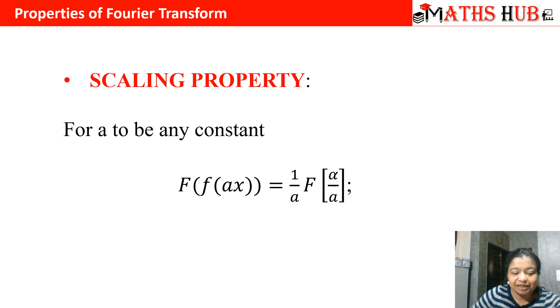The scaling property says that whenever the Fourier transform for the function f of x is equal to f of alpha, then when we change the scale, meaning x is changed to a times x, we multiply by the scaling factor 1 by a, and in your Fourier transform alpha will get changed to alpha by a.